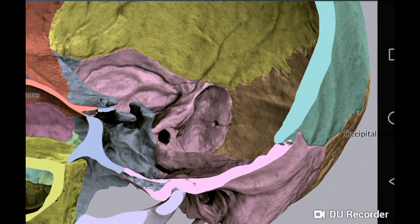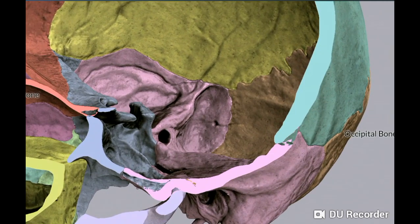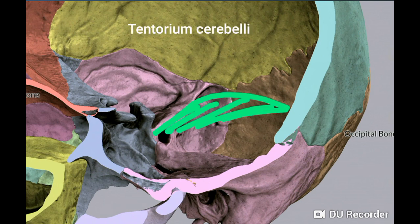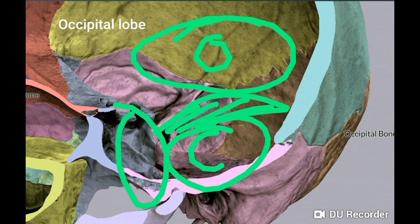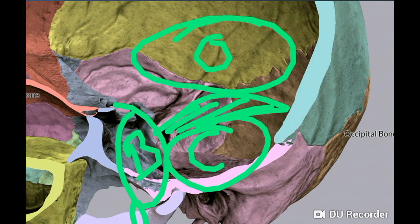Posteriorly and anteriorly, you will see the pons and medulla oblongata. The attachment of the tentorium cerebelli is along the superior border of the petrous temporal bone and the transverse sulcus. Above is the occipital lobe, below is the cerebellum, and in front of the cerebellum is the brainstem — pons and medulla — below which is the spinal cord.